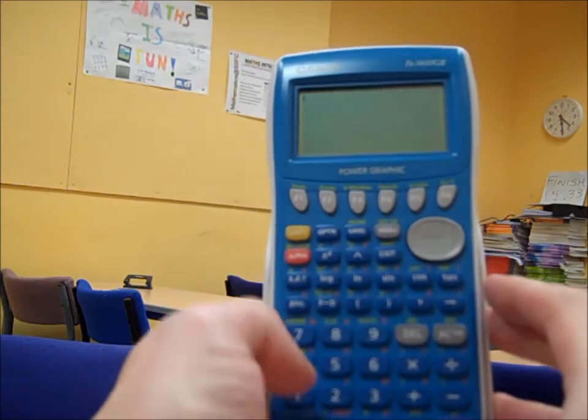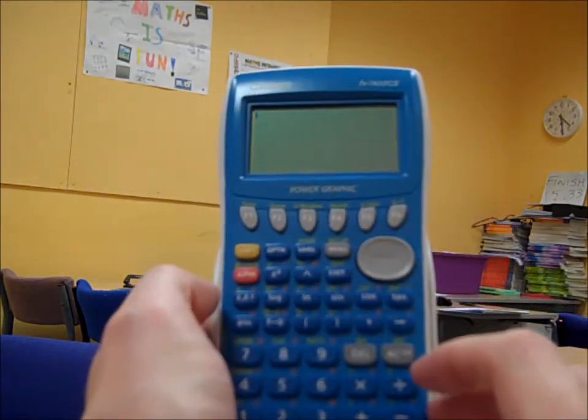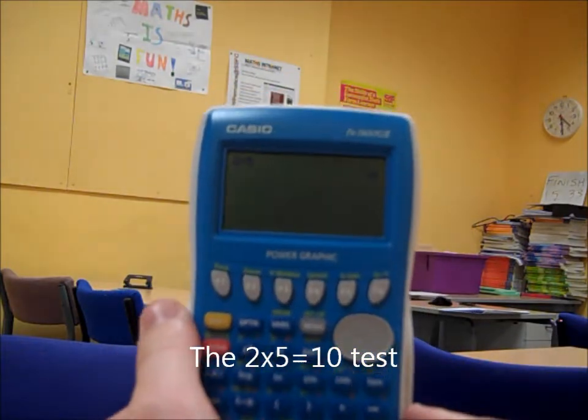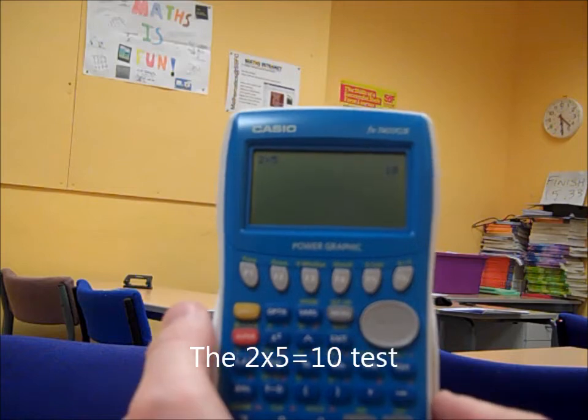If we go into the main run menu, then everything works pretty much the same. Let's check 2 times 5 equals 10. It does pretty good going there.